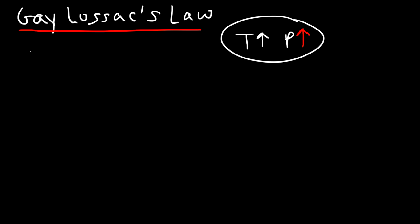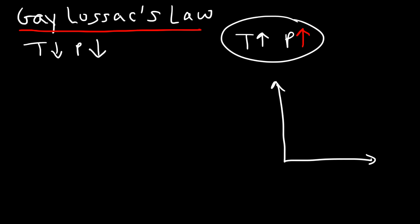That's the gist of Gay-Lussac's Law: temperature and pressure are directly proportional. If you decrease the temperature, the molecules will lose kinetic energy, travel slower, and there will be fewer molecular collisions, so the pressure will decrease. If you plot temperature on the x-axis and pressure on the y-axis, the shape of the graph is a straight line going up — a linear shape. Make sure you know this, as you might be tested on it on your next exam.